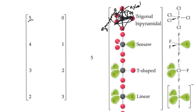Any non-bonding lone pairs in a trigonal bipyramidal arrangement will occupy equatorial positions because they are farther apart there. With one lone pair equatorial, the molecule bends slightly into what's called a seesaw shape. With two lone pairs in equatorial positions, you get a T-shaped molecule. With three lone pairs equatorial, the only remaining atoms are in the axial positions, forcing a linear shape again. So you can get another linear geometry when you have five electron domains with three lone pairs.